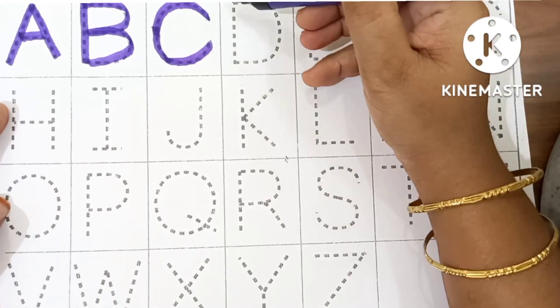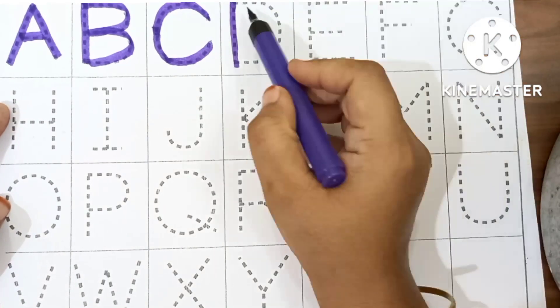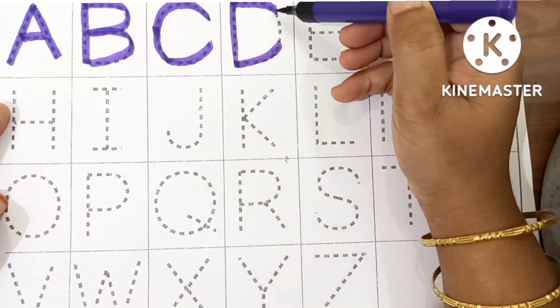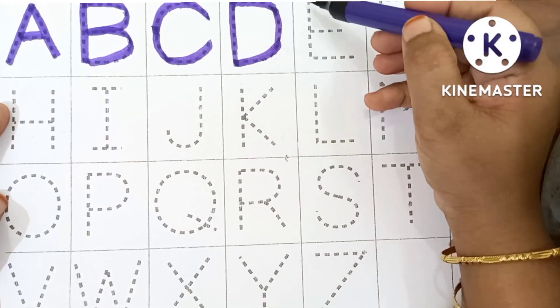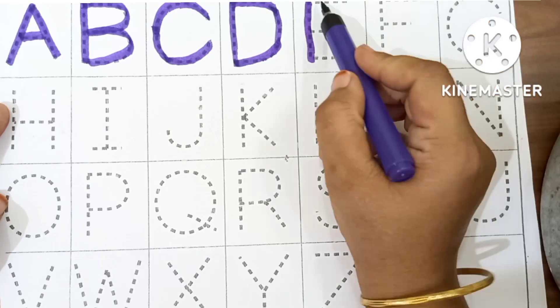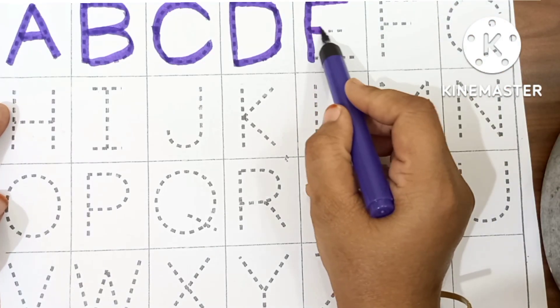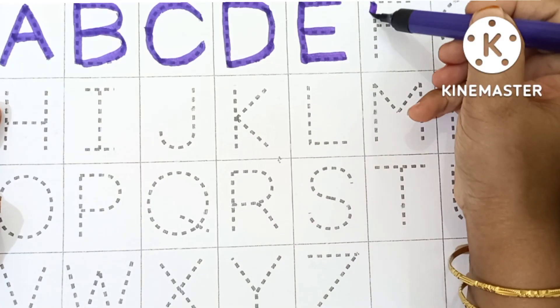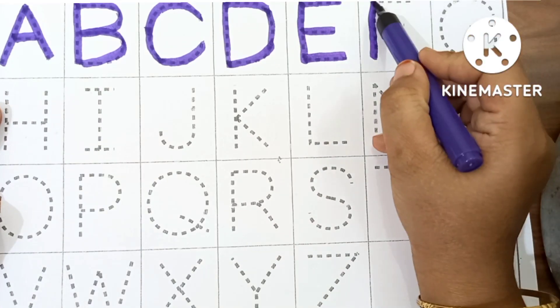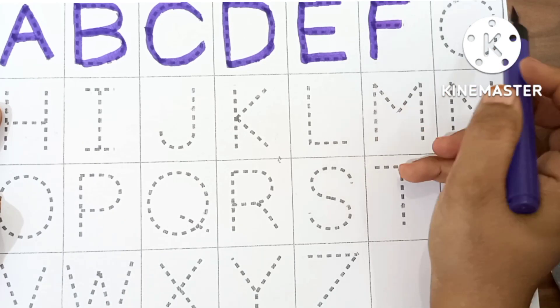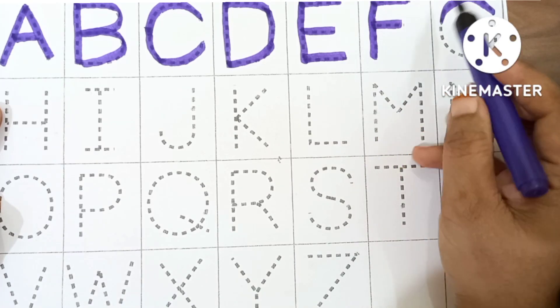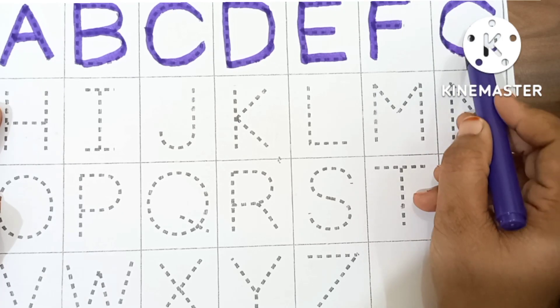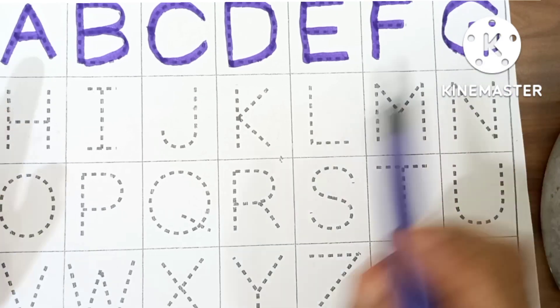Purple color. D. D for Dog. E. E for Elephant. F. F for Fish. G. G for Goat.